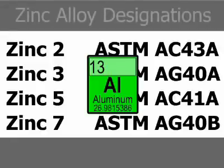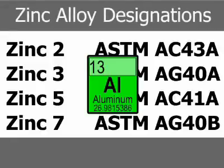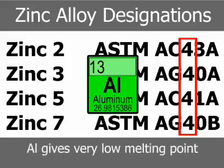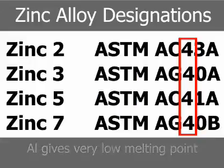The nominal content of each alloy is 4%. Aluminum gives the alloy its mechanical properties, particularly tensile and impact strengths. The relatively low aluminum concentration gives the alloys very low melting points, makes them easy to cast, and allows for extended die life.